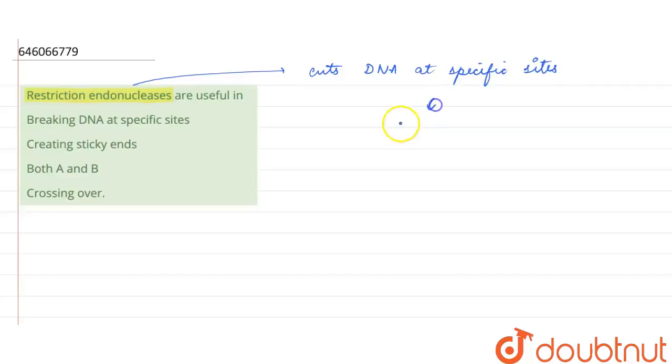Which are called the restriction sites, and it forms sticky ends. These sticky ends have base pairs that can pair with complementary pairs.